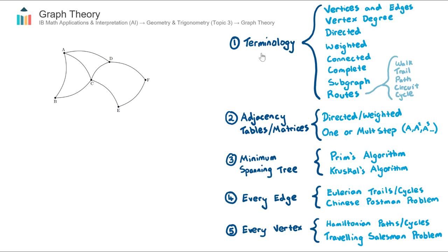Let's start with some terminology. In this graph here, we have both vertices and edges. The vertices are the six towns, A through F, and the edges are the lines that connect the vertices together.